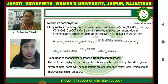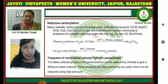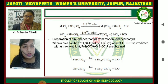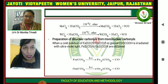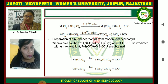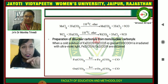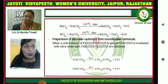Next is the preparation of mononuclear carbonyls from iron pentacarbonyl. You can see this reaction: MOCl6 — chlorine is a ligand, and the chlorine ligand is replaced by the carbonyl ligand present in Fe(CO)5. So Fe(CO)5 reacts with MOCl6 and we get Mo(CO)6, which is a carbonyl.